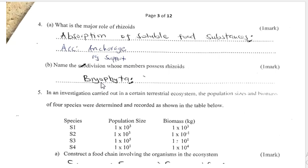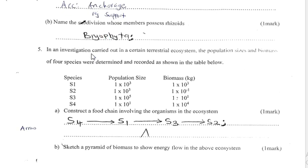Question 4: The major role of rhizoids is absorption of soluble food substances and also anchorage. Part B: Name the division whose members possess rhizoids — that is Bryophyta. Bryophyta consists of the mosses plants.